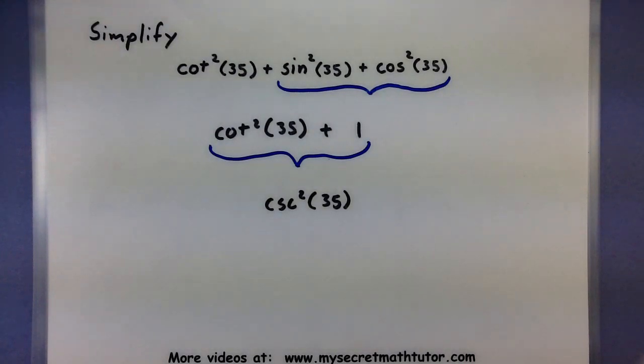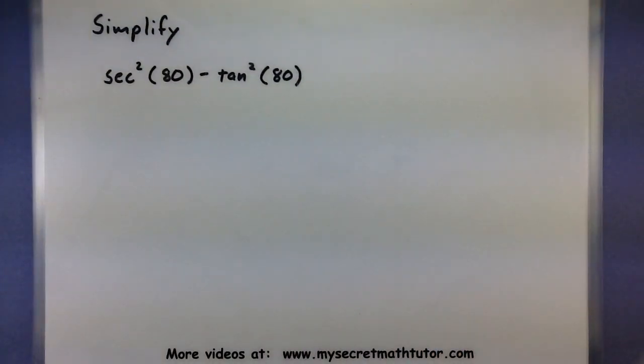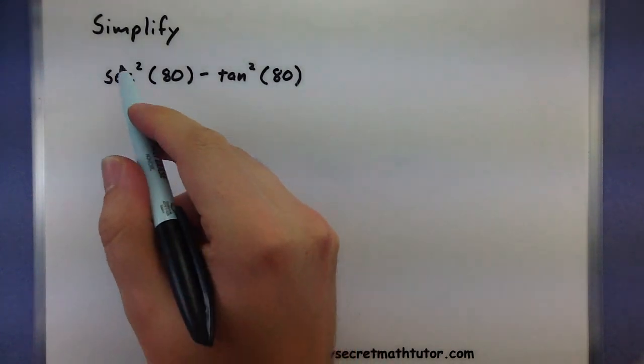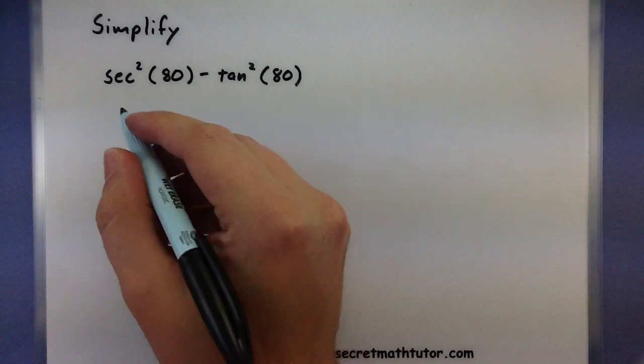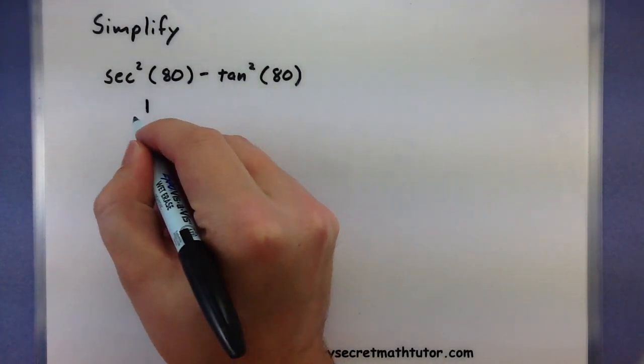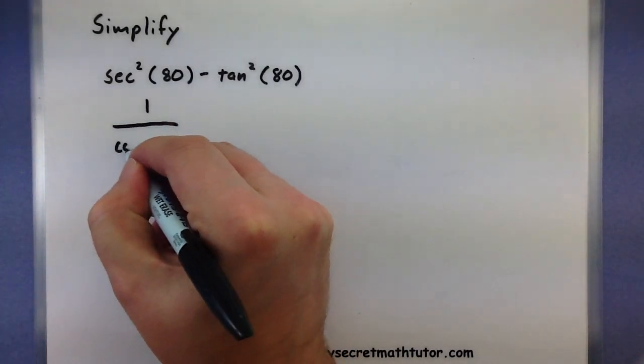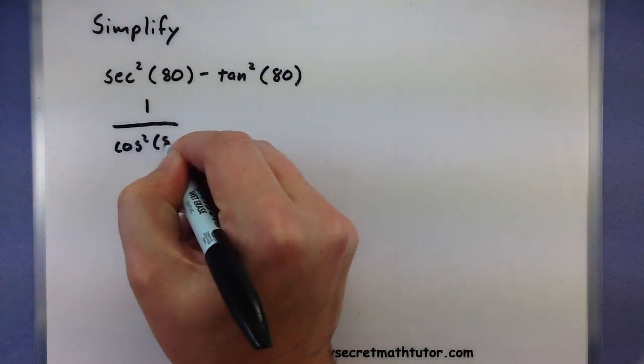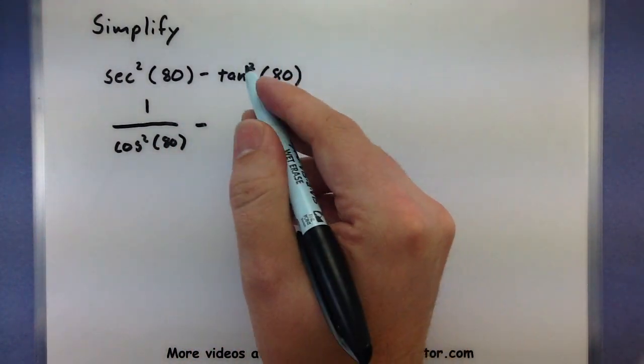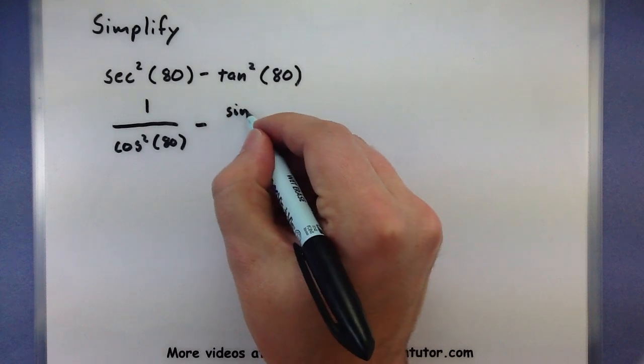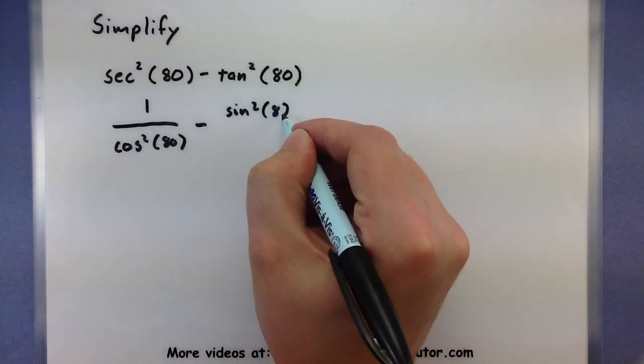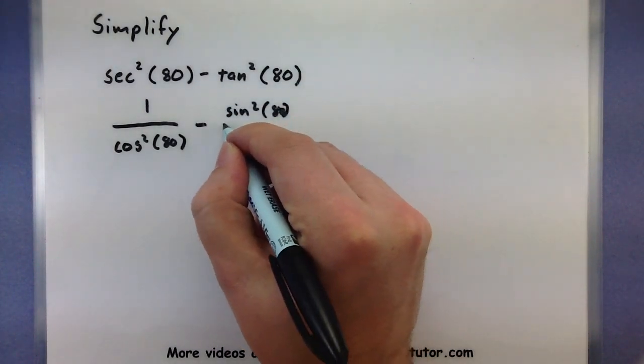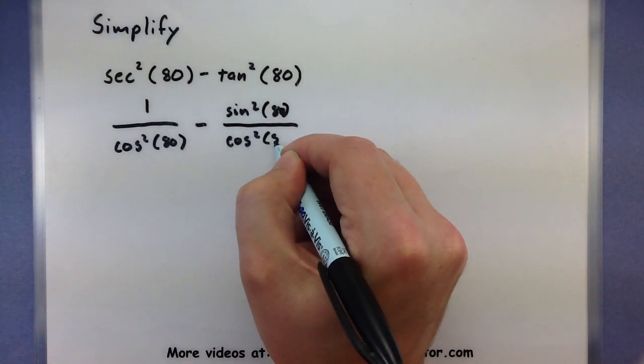Let's give another one a try. Let's see if we can simplify sec²(80) - tan²(80). So let's see, what can we do with this one? Well you might recognize that secant is 1 over cosine. So let's write this as 1 over cos²(80) minus, let's see over here, I have sin²(80) all over cos²(80).